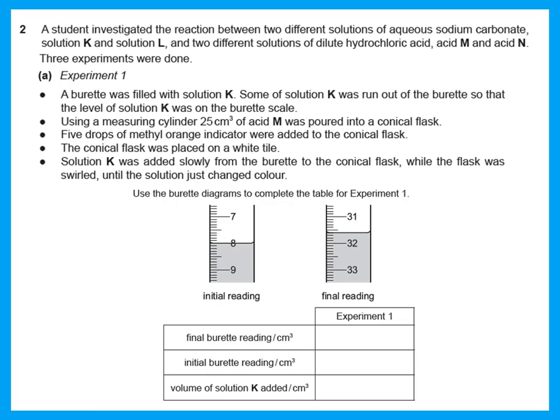The second question investigates the reaction between two solutions of aqueous sodium carbonate — solutions K and L — and two solutions of acid — acid M and acid N. In experiment one, a burette was filled with solution K. 25 cm³ of acid M was poured into a conical flask with five drops of methyl orange added. The conical flask was placed on a white tile.